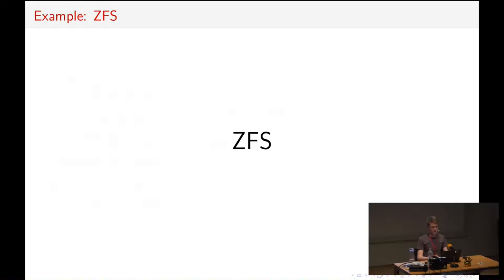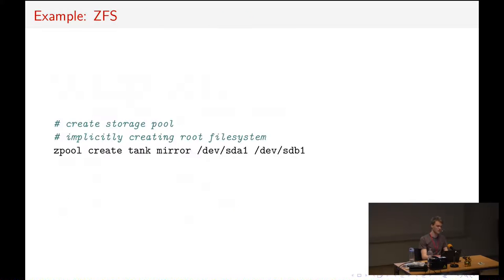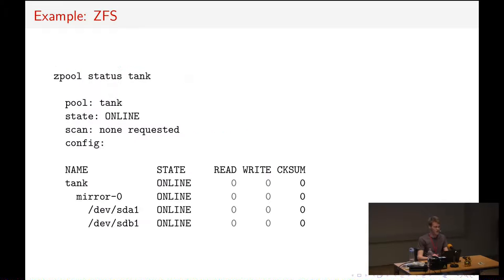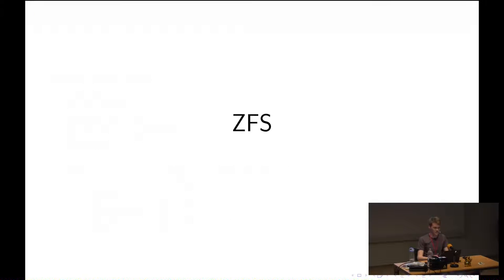In ZFS, what took all those commands is exactly one command. Zpool is the tool to create a pool of storage. 'Tank' is the name of the pool, and what we want is a mirror of devices sda1 and sdb1. That's basically all we are asking for. Running 'zpool status tank' shows a very simple output: the pool tank has no problems reported, no scan requested, and it's composed of a mirror grouping together sda1 and sdb1. This shows how nice this can be for the administrator.